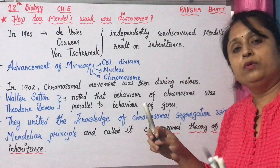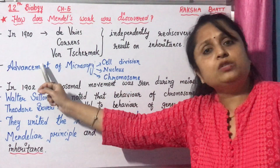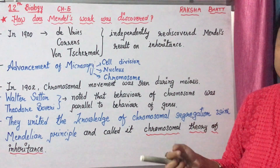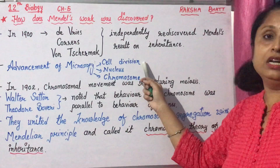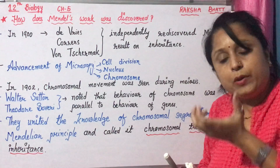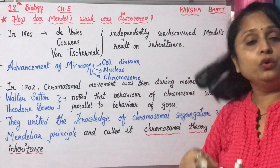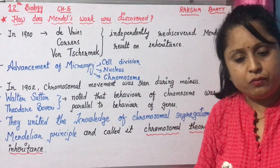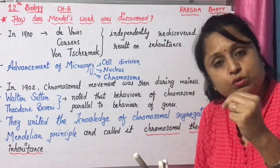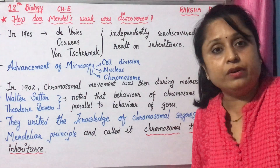After that, the microscope was discovered, and more advanced forms of the microscope were developed. Due to the advancement of microscopy, it became easy to observe cell division. Scientists and biologists began looking through microscopes and observed the nucleus inside cells. They saw that one cell divides to form two cells — this process is known as cell division.